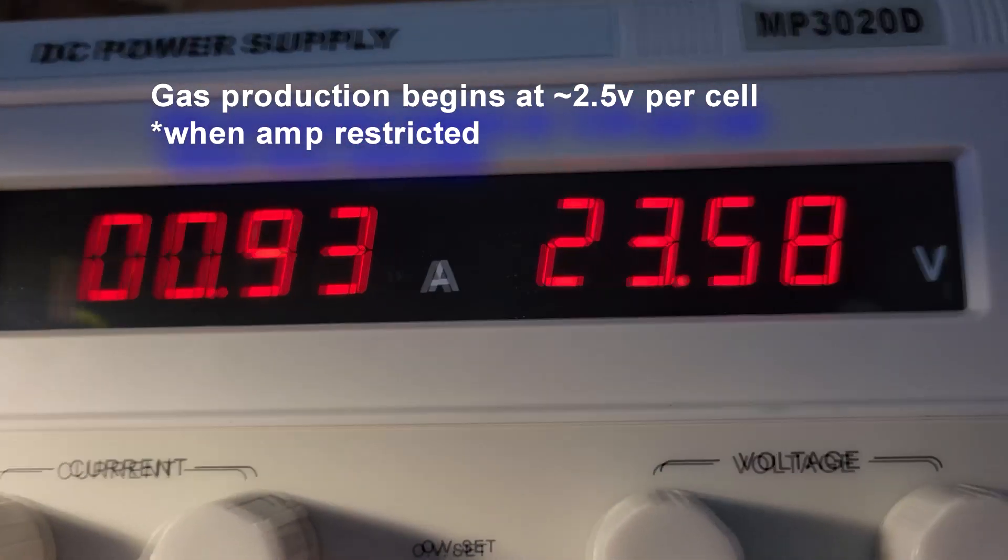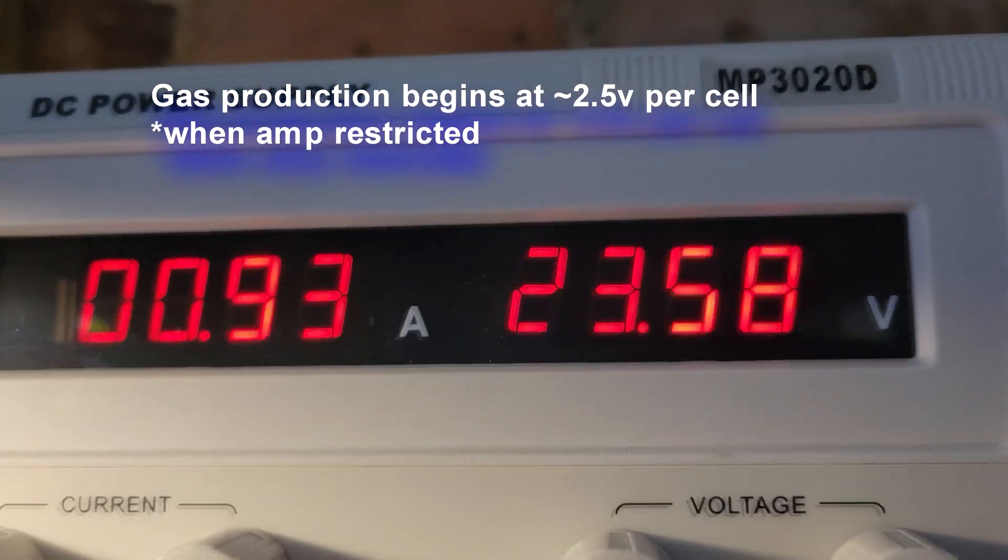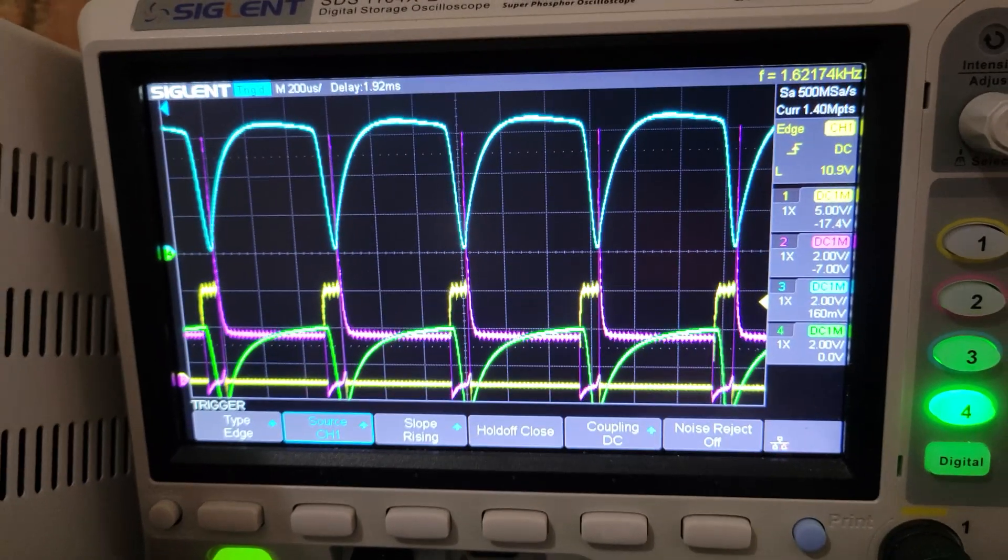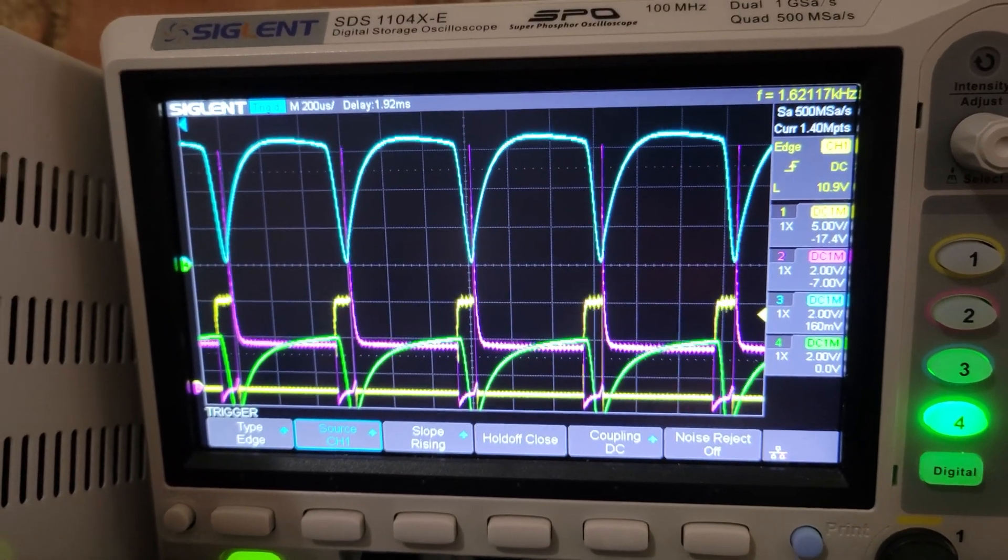But we are consuming less than 1 amp. This is 24 volts in, 1 amp. And that is the pulse that we're getting. This is Stan's Revenge.